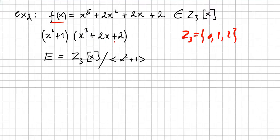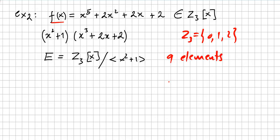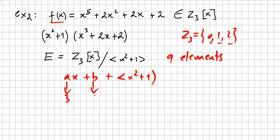This factorization being true, we can build an extension field. The field will be the ring of polynomials over Z₃ divided by the ideal generated by x squared plus 1. This field will have nine elements. The polynomials are of the form ax plus b, with degree less than 2. You have three candidates for a — 0, 1, and 2 — and three candidates for b, so 3 times 3 equals 9.